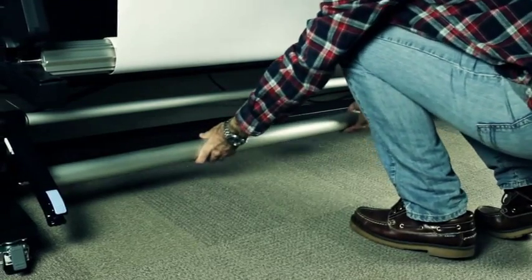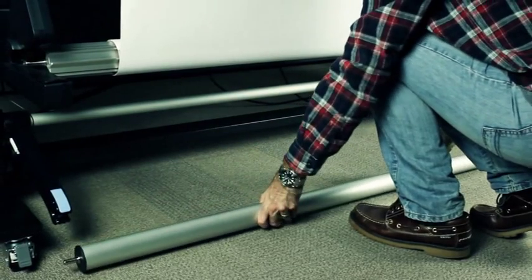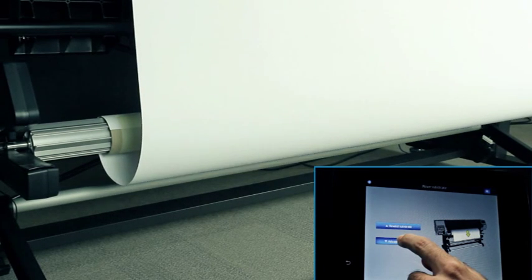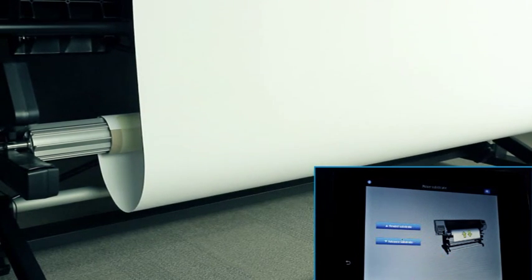Remove the tension bar from the parking position and leave it on the floor. Press the button on the front panel to advance the substrate a little again. Stop advancing before the substrate touches the floor.